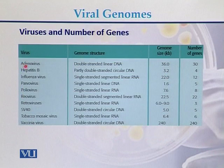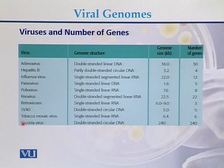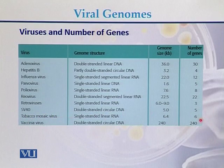Additional comparisons: adenovirus has approximately 30 genes; hepatitis B virus, influenza virus, and parvovirus are also included in this comparison. Tobacco mosaic virus has an approximate genome size of 6.4 kb.